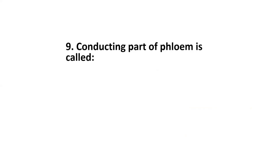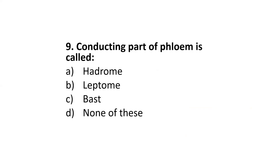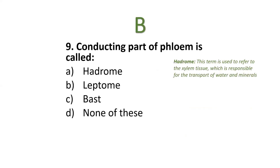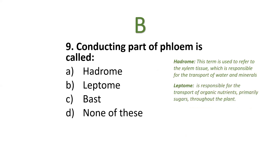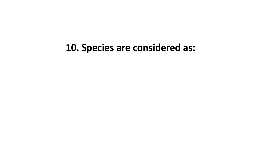Next: the conducting part of phloem is called — hydrome, leptome, or bast? The correct option is leptome. Hydrome refers to xylem tissue responsible for transport of water and minerals. Leptome is responsible for transport of organic nutrients, primarily sugars, throughout the plant. Bast is an older term synonymous with phloem.